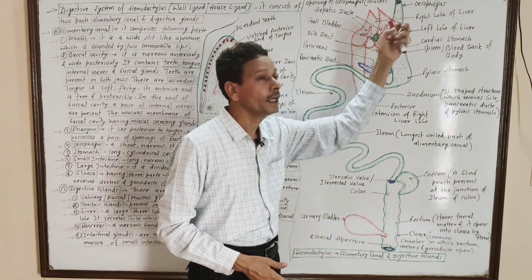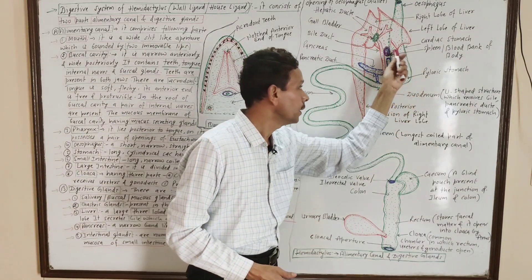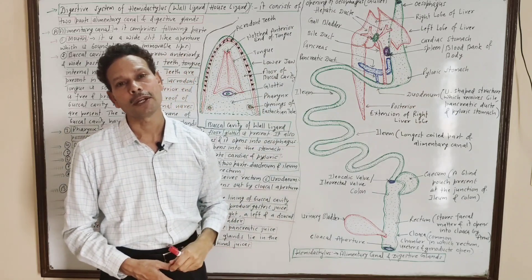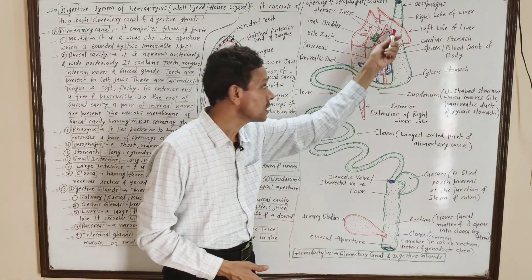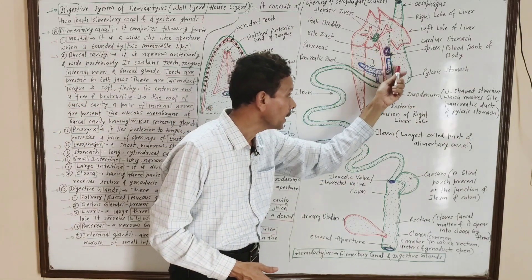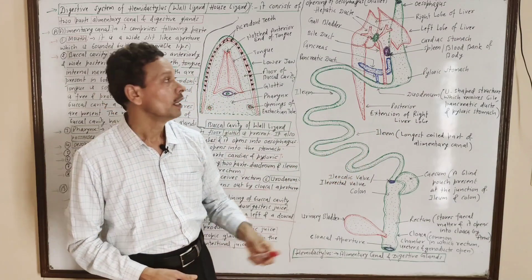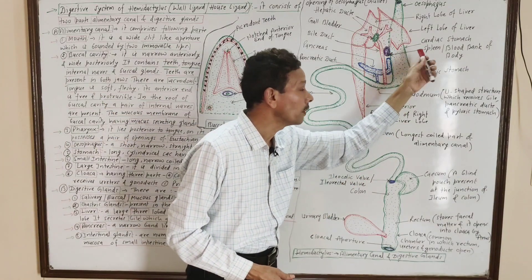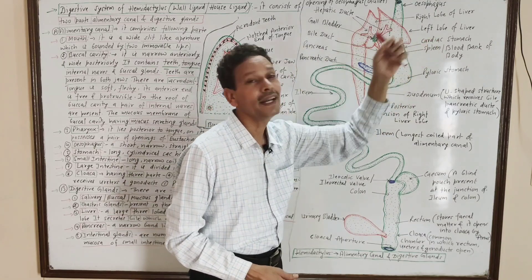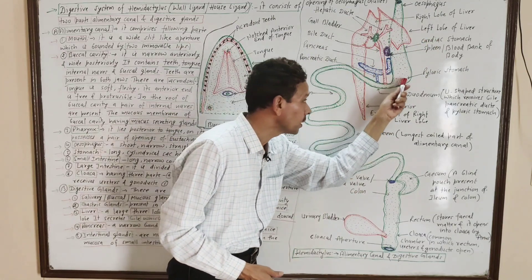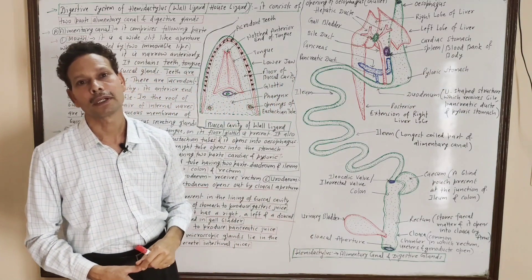The next part is the esophagus, the food pipe. This is an elongated tubular structure which leads into the stomach. The stomach is again a tubular sac-like structure having two parts: the anterior part is the cardiac stomach, and the posterior wider part is the pyloric stomach.